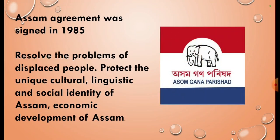Next is the Asom Gana Parishad. The Assam Accord was signed in 1985. It aimed to resolve the problems of displaced people, protect the unique cultural, linguistic, and social identity of Assam, and promote the economic development of Assam. It has assumed power in Assam for many years.